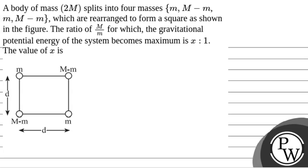Hello, let's read the question. The question says that a body of mass 2M splits into four masses: m, M-m, m, and M-m, which are rearranged to form a square as shown in the figure. The ratio of M/m for which the gravitational potential energy of the system becomes maximum is x:1. The value of x is? So,